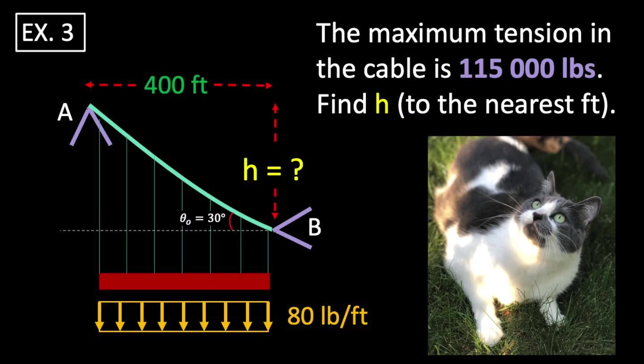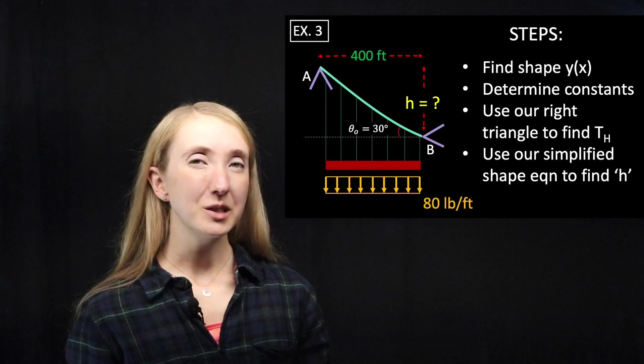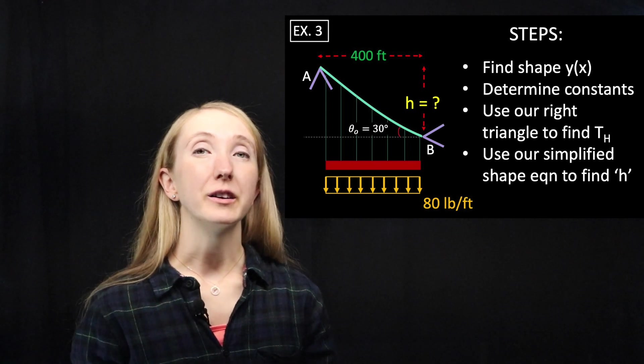For our last example, we have a section of cable suspended between two points. It has a span of 400 feet and a uniform load of 80 pounds per foot. At support B, the cable makes an angle of 30 degrees to the horizontal. We're told that the maximum tension in the cable is 115,000 pounds. What is the height of the cable system, h? At first, this problem is kind of intimidating.